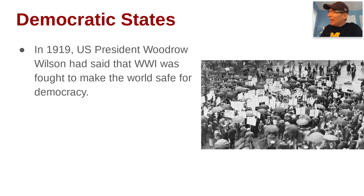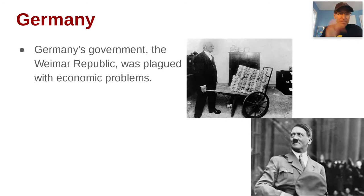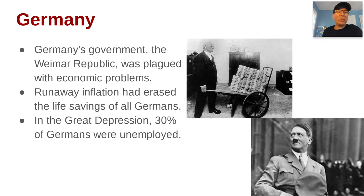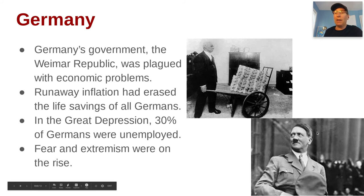Woodrow Wilson said in 1919 that World War I had been fought to make the world safe for democracy — democratic ideas had spread, but the Great Depression made people question whether it was working. Germany's government, the Weimar Republic, was plagued with economic problems: runaway inflation erased the life savings of common Germans, and during the Great Depression 30 percent of all Germans were unemployed. This leads to a rise of fear and extremism in Germany, ushering the German people into the arms of Adolf Hitler, who would prey upon that fear and extremism. We'll definitely be talking more about him later.